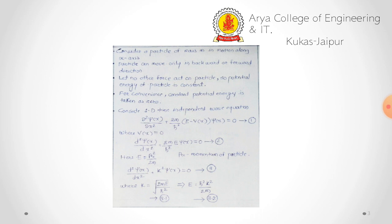To solve this, we use the one-dimensional time-independent Schrödinger wave equation: d²ψ(x)/dx² + (2m/ħ²)(E − V(x))ψ(x) = 0. Here ψ(x) is the wave function for one dimension, m is the mass of the particle, ħ is the reduced Planck constant equal to h upon 2π, E is the energy of the particle, and V(x) is the potential function.